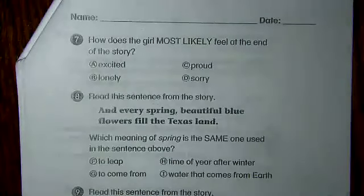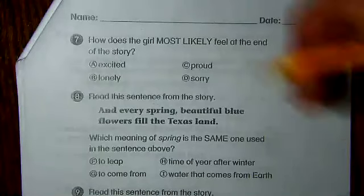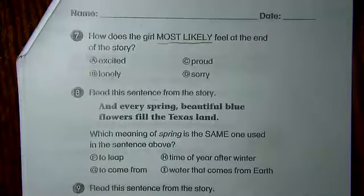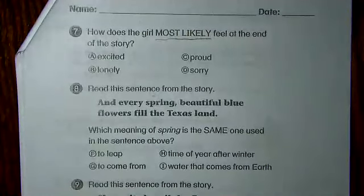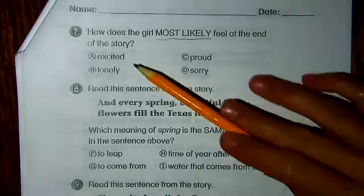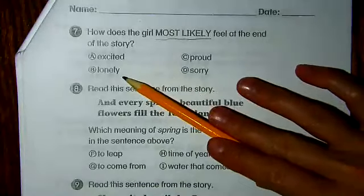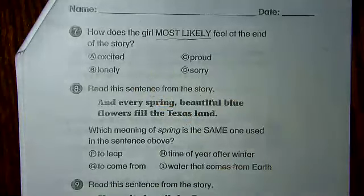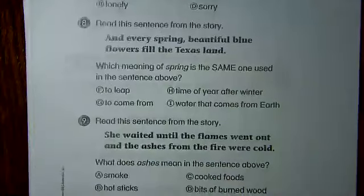Number seven: how does the girl most likely feel at the end of the story? 'Most likely' means make your best prediction based on what we read and what you already know. Do you think at the end she felt A) excited, B) lonely, C) proud, or D) sorry? You can go back to the end of the story for text evidence and see if you find any clues around the sentence about the girl.